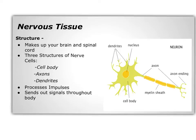Nervous tissue makes up your brain and spinal cord. There are three types of structure of the nerve cells. They are arm-like structures: axons, that send information away from the cell body; dendrites, which receive information from other neurons; and the cell body, which contains the nucleus. Nerve cells process signals called impulses that get sent out through the body.